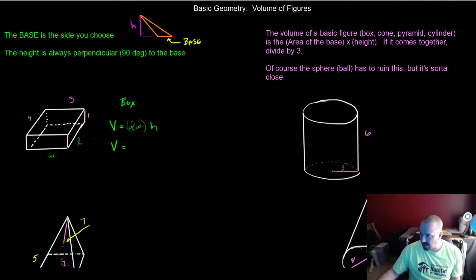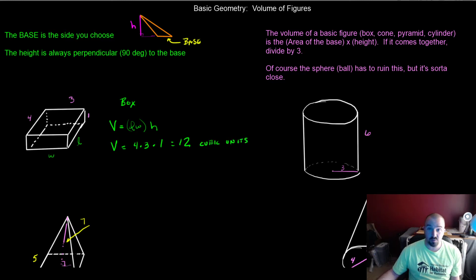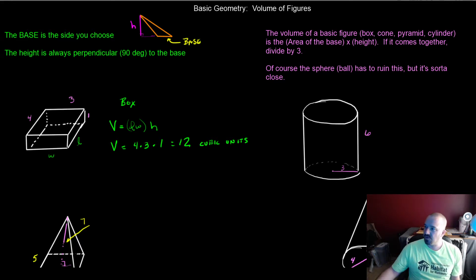So the area of the base is 4 times 3, times the height, which gives us 12. Now, 12 what? It's cubic units — whatever the units happen to be. Always make sure your units are in agreement. Don't make the mistake of mixing, say, three feet by four feet by one inch and calling it 12 cubic feet — the inches are still in there and that's bad.